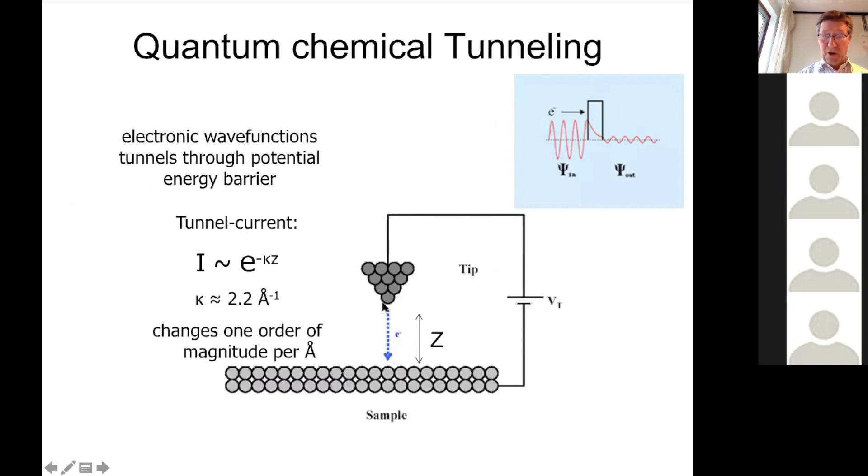So in that way, there's a current between a tip and a surface, and the tunnel current has an exponential relation to distance. The z here is the distance between the tip and the surface, and this kappa is the distance-dependence factor. So for vacuum, it's 2.2 per angstrom. So there's an exponential term here that changes 2.2 per angstrom. In that way, you can visualize on an atomic scale, you can visualize molecules, and that is important.